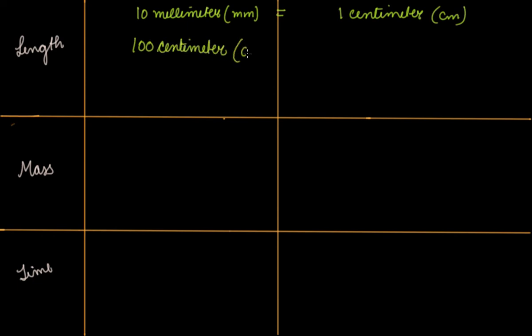Now let's take here length. The units that are used to measure length. Your 10 millimeter, that is mm, is equal to 1 centimeter. Then 100 centimeter is equal to 1 meter. Then 1,000 meters is equal to 1 kilometer. This is about the length in meters or kilometers.